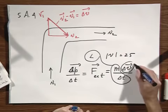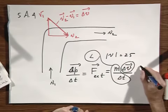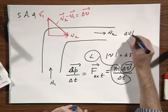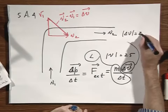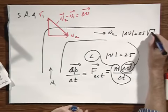What is the magnitude of Delta V? The magnitude of Delta V equals 25 times the square root of 2.